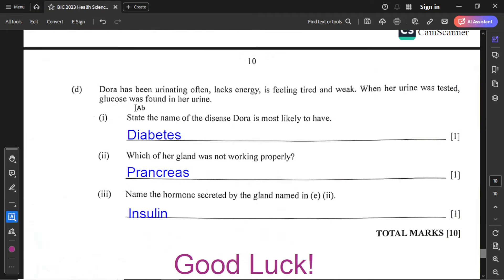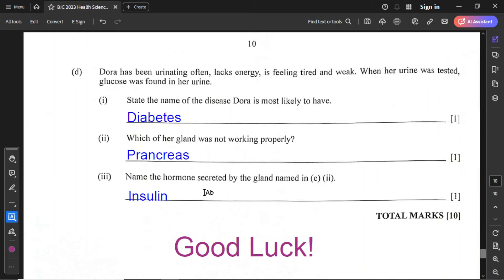For part D, Dora has been urinating often, lacks energy, is feeling tired and weak. When her urine was tested, glucose was found in her urine. Part D1: state the name of the disease Dora is most likely to have. That is diabetes. Part D2: which of her glands was not working properly? That is the pancreas. Part D3: name the hormone secreted by the gland named in D2. That is insulin. Insulin is the response to control your blood sugar level or blood glucose level.